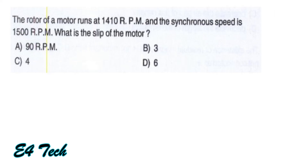The rotor of a motor runs at 1410 RPM and the synchronous speed is 1500 RPM. The slip is calculated as: slip = (Ns - N) / Ns × 100 = (1500 - 1410) / 1500 × 100 = 6%. That is option D.